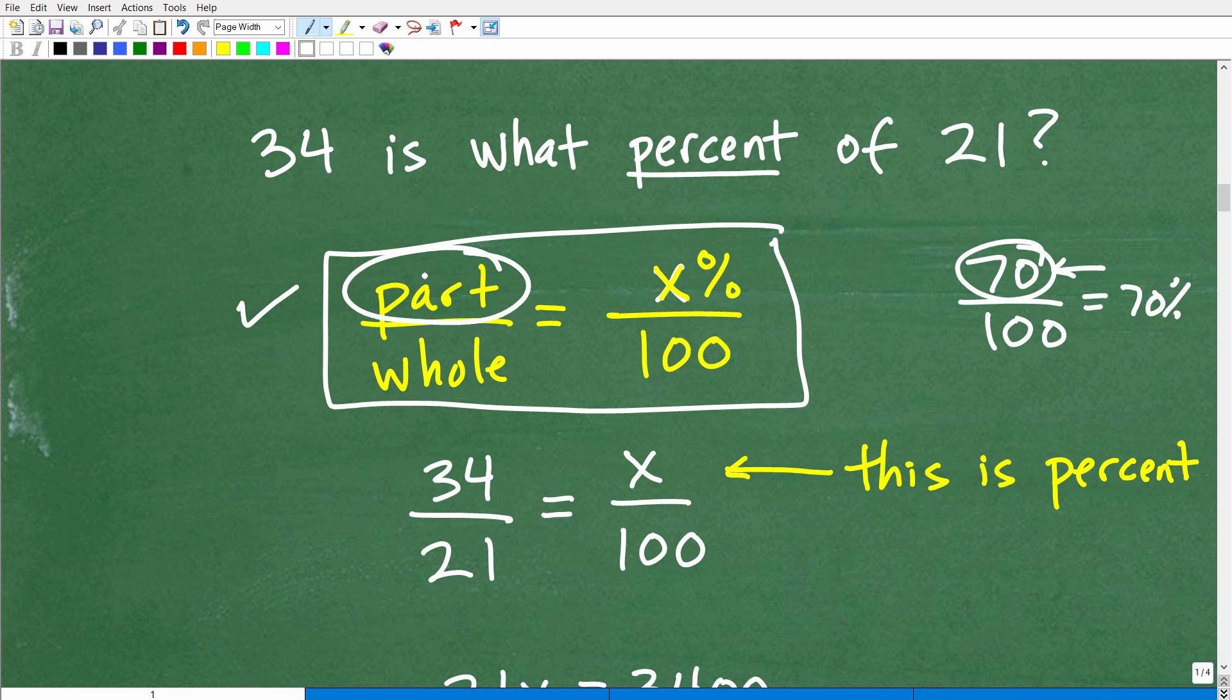Okay, so what is the part out of the whole? Well, again, that part is 34. The whole is 21. I'm looking for that percent X right there, okay?